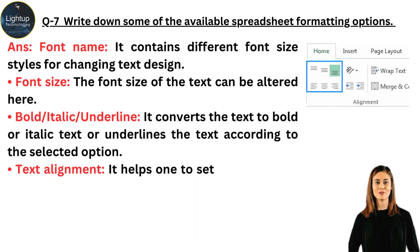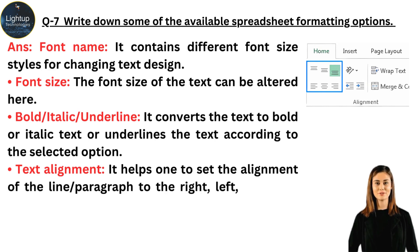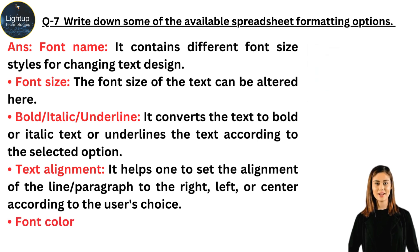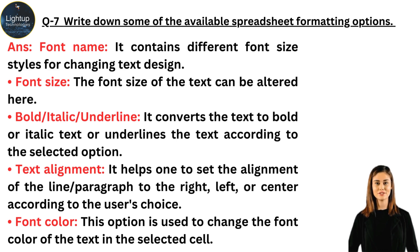Text alignment: it helps one to set the alignment of the line or paragraph to the right, left or center according to the user's choice. Font color: this option is used to change the font color of the text in the selected cell.